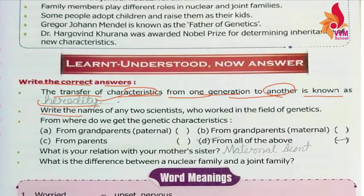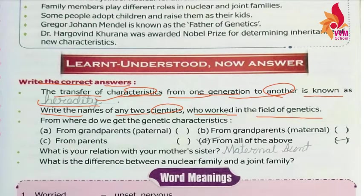Next we have: write the names of any two scientists who work in the field of genetics. In the field of genetics, the names will be Dr. Hargobind Khorana and Gregor Johann Mendel. A PDF has been sent to you, so you can note the answers from there.